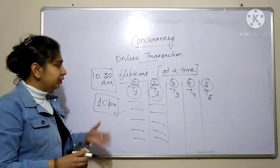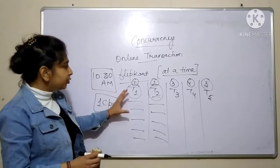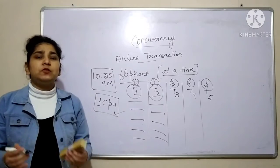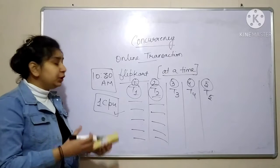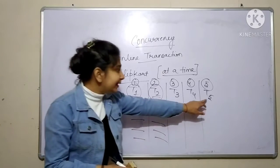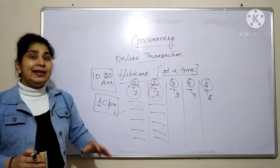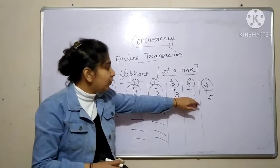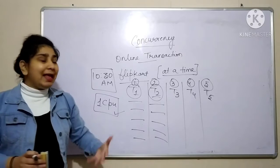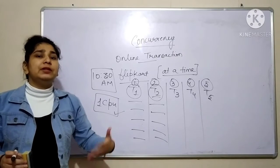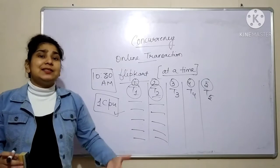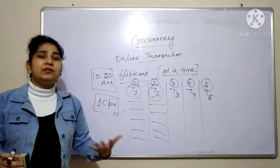But there is a drawback to this kind of execution. If we are going to execute all these transactions serially, then users have to wait for a long period of time. If you look at the fifth user, it has to wait unless all these four transactions get processed. That is how our technology is getting improved day by day — we don't want any waiting; we want our transactions to be processed as fast as possible.